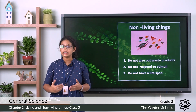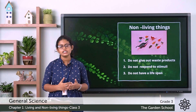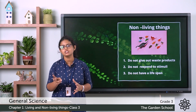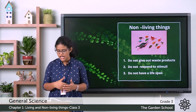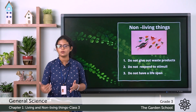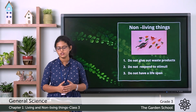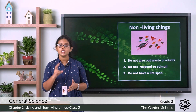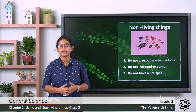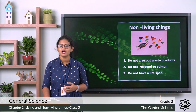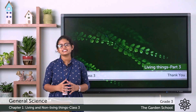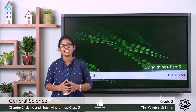On page 11, we learn about the great scientist Aristotle. Aristotle was a Greek scientist who studied 500 types of animals and grouped them into two: animals with blood and animals without blood. He further divided animals with blood into animals that give birth to young ones and animals that lay eggs. I hope you all understood the topic — we'll meet in the next class with a new chapter. Thank you.